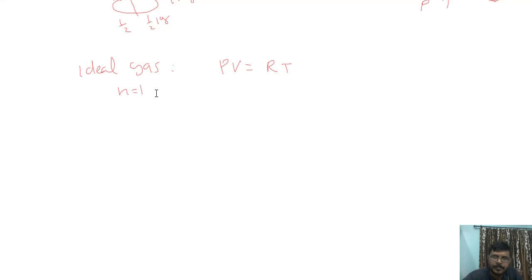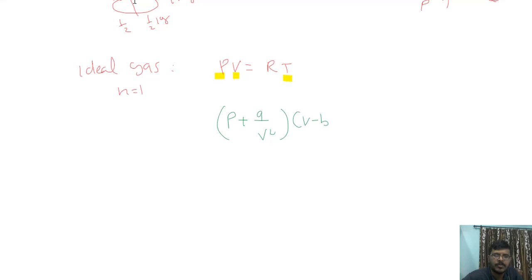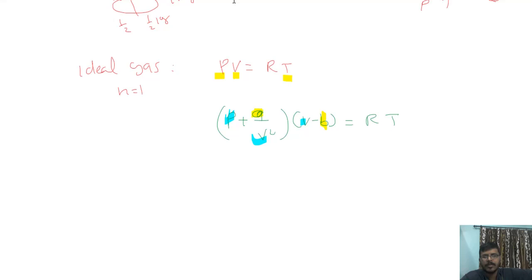In the ideal gas equation PV = RT, there are three variables: pressure, volume, and temperature. R is the universal gas constant. For a real gas, the Van der Waals equation is: (P + A/V²)(V − B) = RT. Here A and B are constants for a given gas; if you change the gas, these constants change. This equation also has three variables: pressure, volume, and temperature.